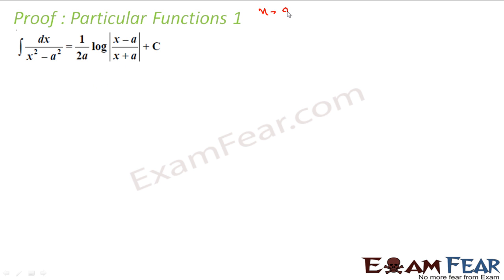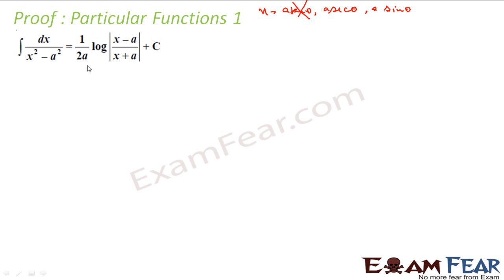Here I have the option of choosing x = a·tan θ, x = a·sec θ, or x = a·sin θ. Since it is a minus form, tan θ is not in the picture. So I have the option of choosing a·sec θ or a·sin θ. I'll put x = a·sec θ.